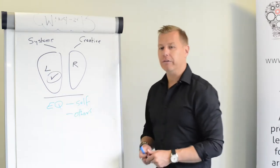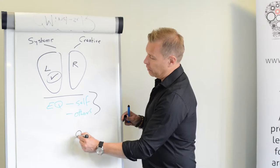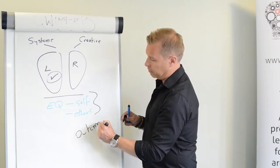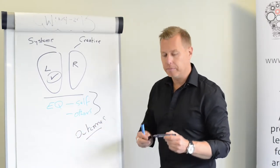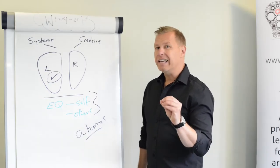So EQ is about getting that balance. And when you put those two together, what tends to happen is you achieve the outcome that you're looking for in terms of people, because relationships are critically important to any outcome.